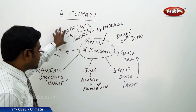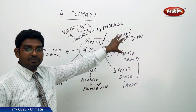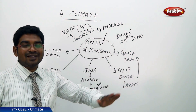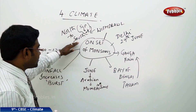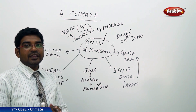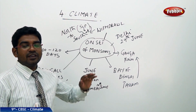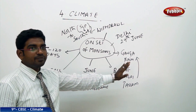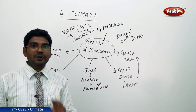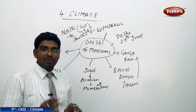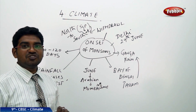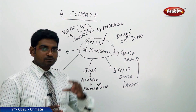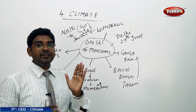The withdrawal of the monsoon is a very rapid process in India. Withdrawal begins from the northwestern side in the month of September, then it slowly moves northward and takes off from there. Finally, it comes towards the south, and by the end of October the offset of the monsoons comes to an end.